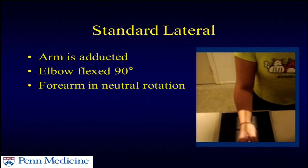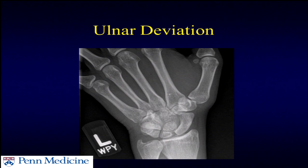With your standard lateral, the arm should be adducted to the side with the elbow flexed to 90 degrees and the wrist in neutral. For the PA especially, I want to ensure I have a true zero-rotation film so I can accurately assess ulnar variance and everything else from that.